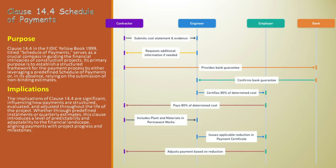In conclusion, the sequence diagram for Clause 14.4 in the FIDIC Yellow Book encapsulates a structured and dynamic process for managing payments in construction projects. From the contractor's initial submission of quarterly estimates to the final adjustment to revised installments, each step is interconnected and crucial for ensuring a smooth financial flow. This sequence reflects both the contractual obligations and the practical realities of project execution, emphasizing the importance of continuous monitoring, communication, and flexibility.